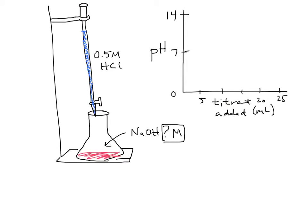If you drew a curve that started high and dropped down, you'd be spot on. The equivalence point in this case is right around pH 7, and it would take about 16 milliliters of titrant added. When our unknown is a base, it makes sense that our pH would start above 7. In the other example where it's an acid, our pH would be below 7. That's the conceptual piece — now let's look at the quantitative aspect.